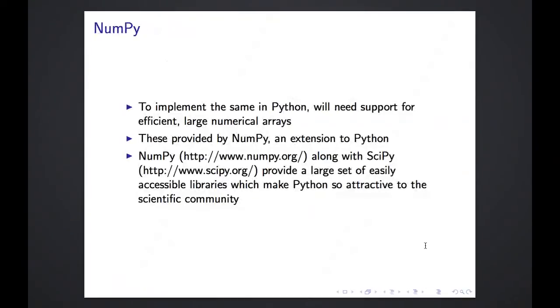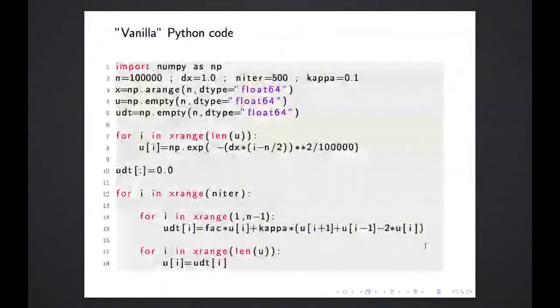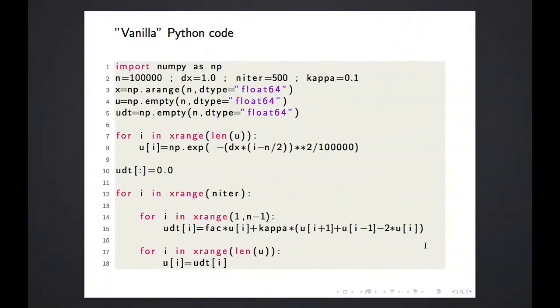So let's say I want to rewrite the same code in Python. For this, the first thing I will need is numerical arrays, and these are not provided in Python by default. One can make arrays as lists, but it's highly inefficient. So NumPy is a very standard extension which provides arrays with its functionality. And along with SciPy, these two libraries provide a wide range of tools which make Python so attractive to the scientific community.